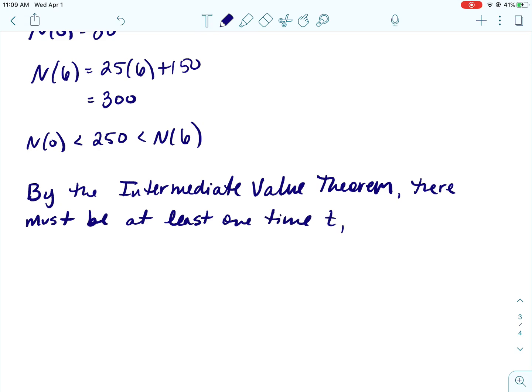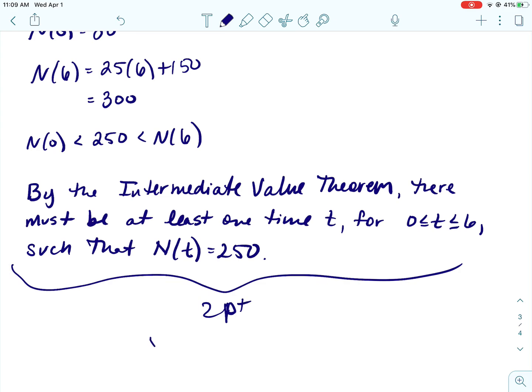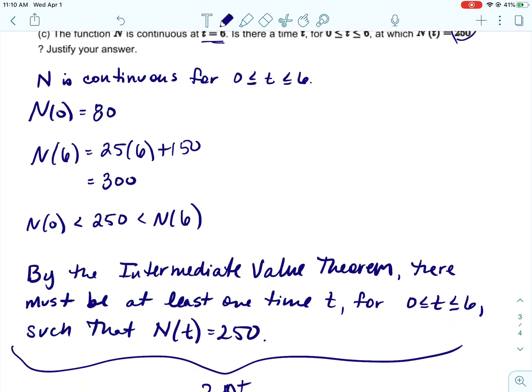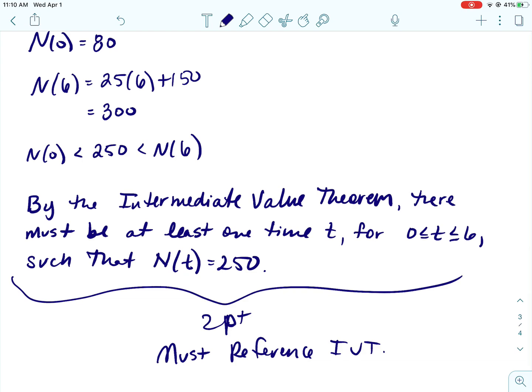So by the intermediate value theorem, there must be at least one time t for t is between 0 and 6. There's more than one way to word that. You could say on the interval from 0 to 6. There's lots of ways you could do that. But anyway, such that N(t) equals 250. So all of this stuff is going to be two points. And you must, to get both your points, you must reference the intermediate value theorem.